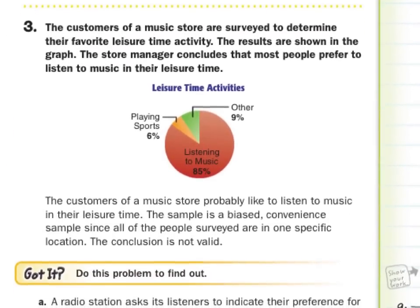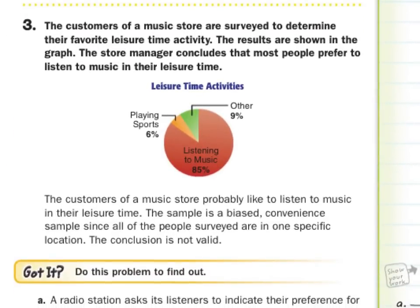Third guided example: customers of a music store are surveyed to determine their favorite leisure time activity. The store manager concludes that most people prefer to listen to music in their leisure time. Customers going into a music store are probably fans of music — it's a biased convenience sample, since all people surveyed are in one specific location. The conclusion is not valid.